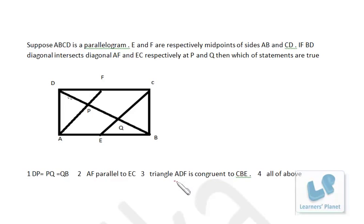First of all, we see triangle ADF and CBE. Now, this angle is equal to this angle because opposite angles in a parallelogram are same. So, this angle is equal to this angle. I assume this to be X and this to be X. Both of them are same.